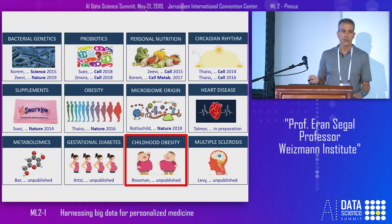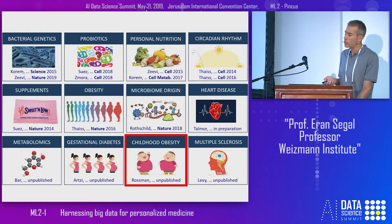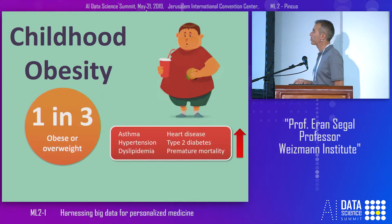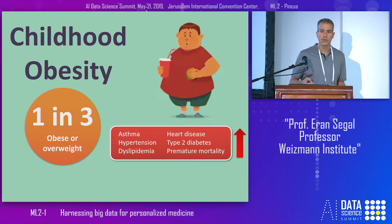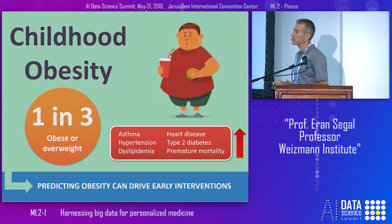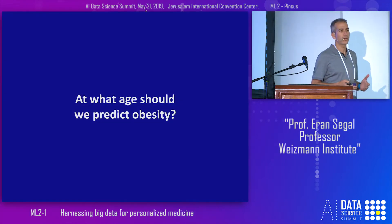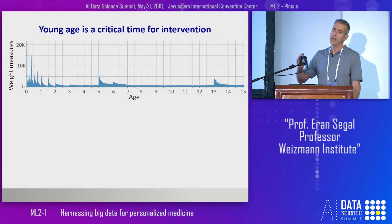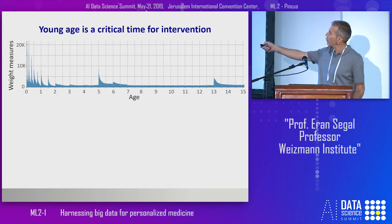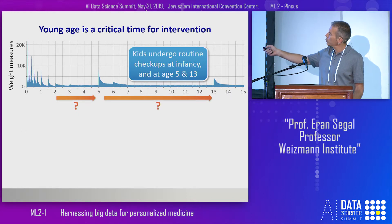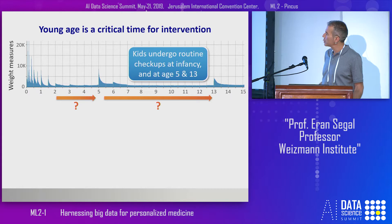I want to move to a different project — trying to predict childhood obesity, also using EHR data. Childhood obesity is a major problem, affecting one in three children who are either overweight or obese, with many medical complications. Here too, interventions can be effective, so early diagnosis has value. The first question we asked was at what age should we try to predict childhood obesity. We turned to the Klalit data, saw when weight measurements are taken, and found peaks corresponding to routine checkups. We considered two options: predicting obesity at age 5 from data accumulated up to age 2, or at age 13 from data accumulated up to age 5.